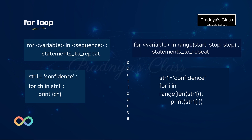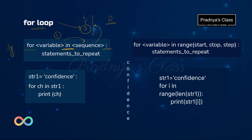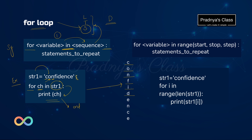Let's understand how for loop works on a sequence — it works similarly with list, tuple, and string. The first way uses the 'in' operator. Syntax: 'for variable in sequence' — sequence can be list, tuple, or string — followed by a colon and the statements in the body. For example, iterating over a string: 'for i in string1: print(i)' — characters are printed one by one on new lines. If you want them on the same line, use the 'end' parameter of the print statement.